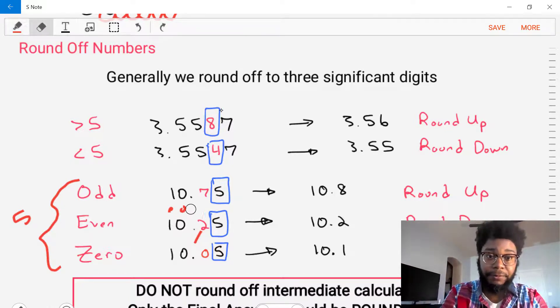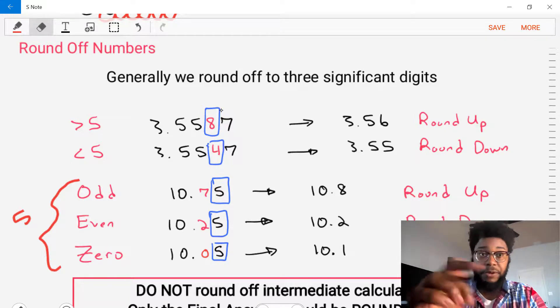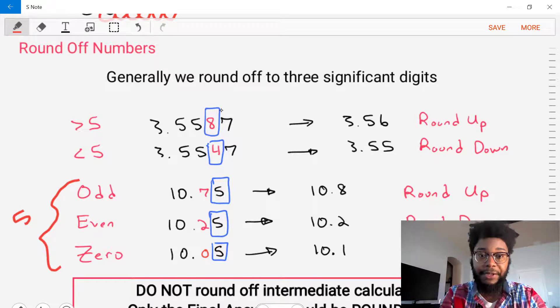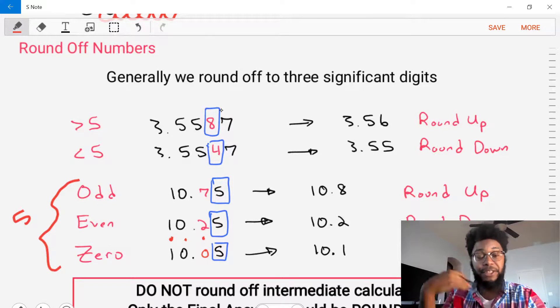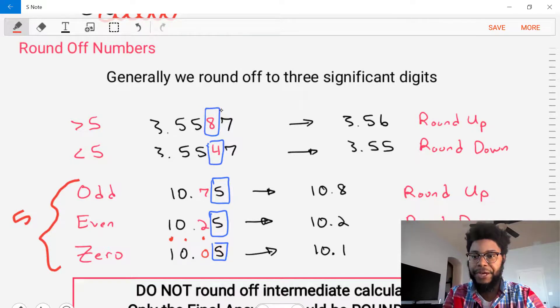All right. Now what about, what if our number is zero? What if we have the case where it's zero? So let's look at 10.05. We have one, two, three significant digits. Our fourth one is exactly five. And our third one is zero. If we have a zero, then what we're going to do is we are going to round up to 10.1. And there we go.